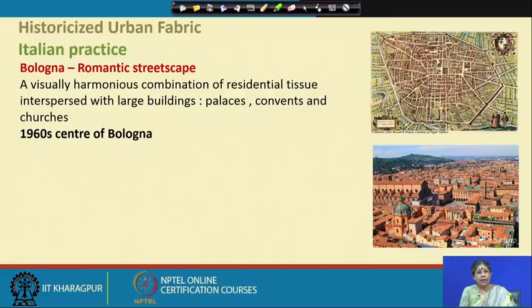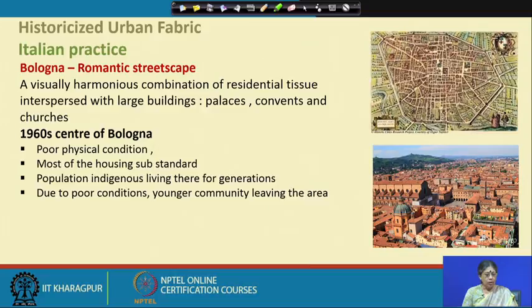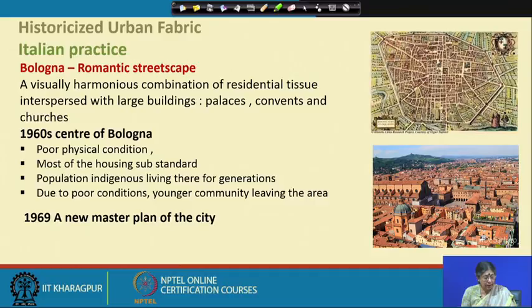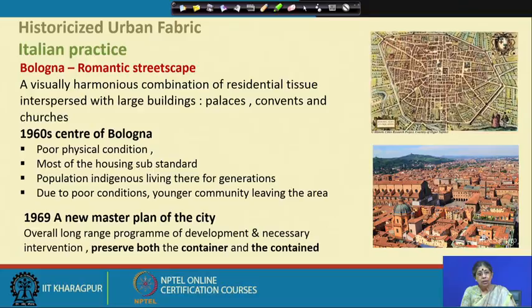We are not talking only about preservation — we are talking about making it a living, prospering urban entity. In the 1960s, the center of Bologna was in very poor physical condition. Most housing was substandard, and the indigenous population who had lived there for generations was experiencing out-migration of the younger generation. In 1969, a new master plan of the city was formulated. The master plan has also changed over the years in concept and purpose — earlier it was strictly land-use control, but over the years it has shifted more towards strategic planning.